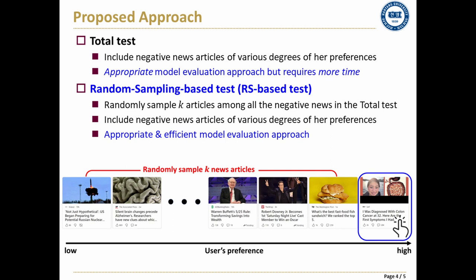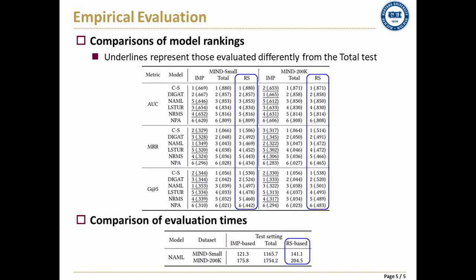However, the total test requires more time in testing than the imp-based test, since it must compute a larger number of articles. To address this limitation, we sample only K articles randomly among all the negative articles in the total test. We call this evaluation approach the RS-based test. These tables show the results of model rankings and evaluation times in three different test settings, confirming that the RS-based test can determine superiority among models correctly, as in the total test, while requiring as little time as the imp-based test.